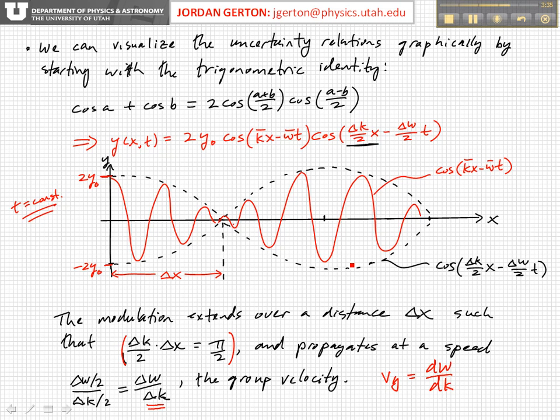And so this gives us an initial look at wave packets and the uncertainty relations. In an upcoming lecture, we'll generalize this to the sum of more than two waves, and then we will see how we can arrive at the Heisenberg uncertainty relationships from doing that.